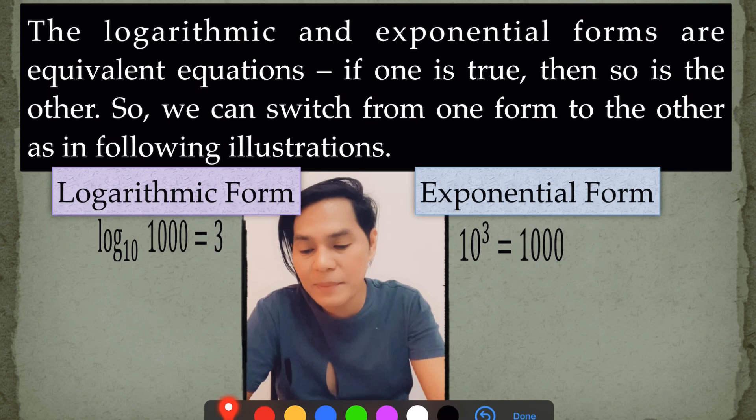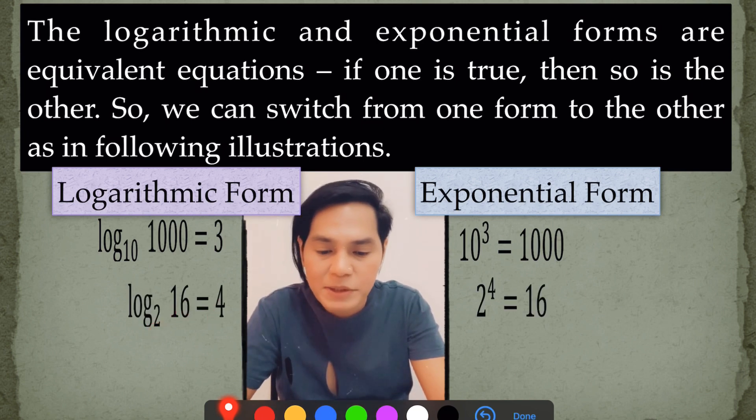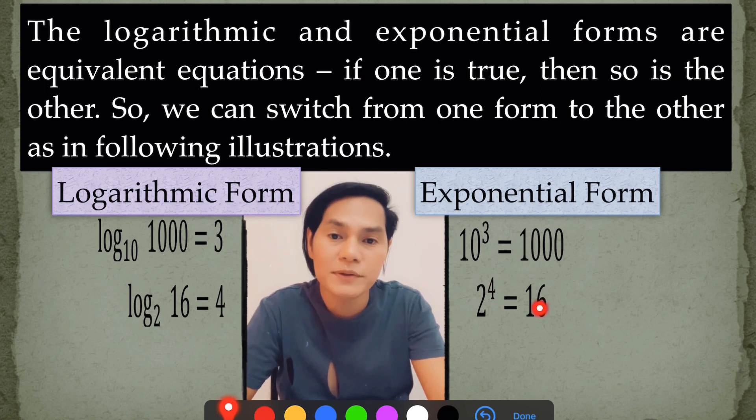Now, another example. The log of 16 to the base 2 is equal to 4. Then in exponential form, that is 2 to the power of 4 is equal to 16.